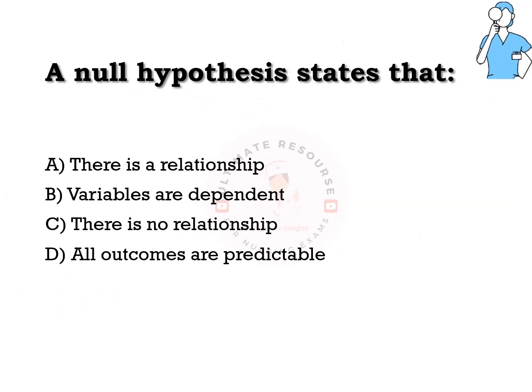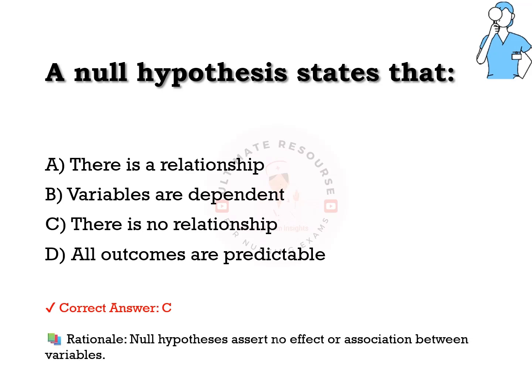A null hypothesis states that: options are a) there is a relationship, b) variables are dependent, c) there is no relationship, d) all outcomes are predictable. The answer is c) there is no relationship. Null hypotheses assert no effect or association between variables.